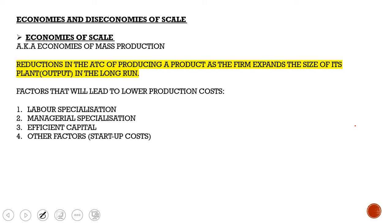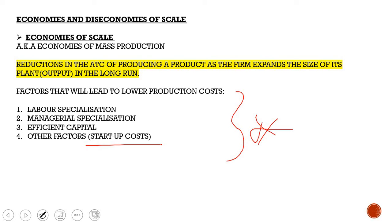Economies of scale, also known as economies of mass production, occur when the more you produce, the lower your average cost. It is a reduction in average total cost as the firm expands plant size or output in the long run. Factors leading to lower production costs include labor specialization, managerial specialization, efficient capital, and the absence of startup costs — since startup costs are part of the short run, in the long run you don't have them.